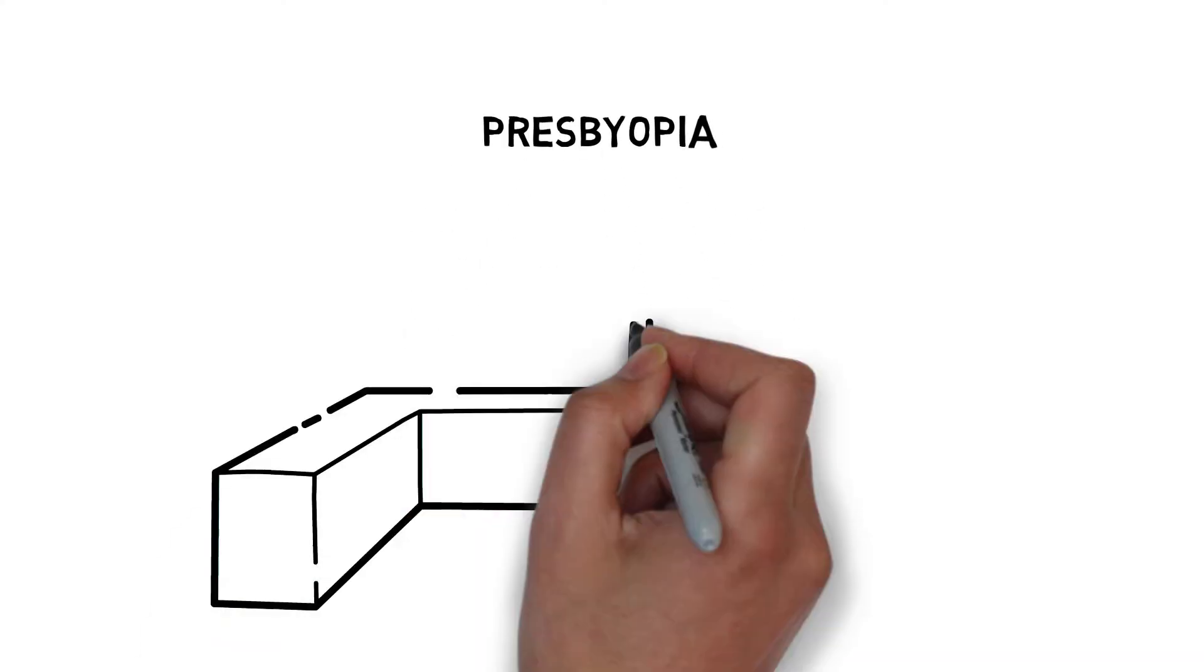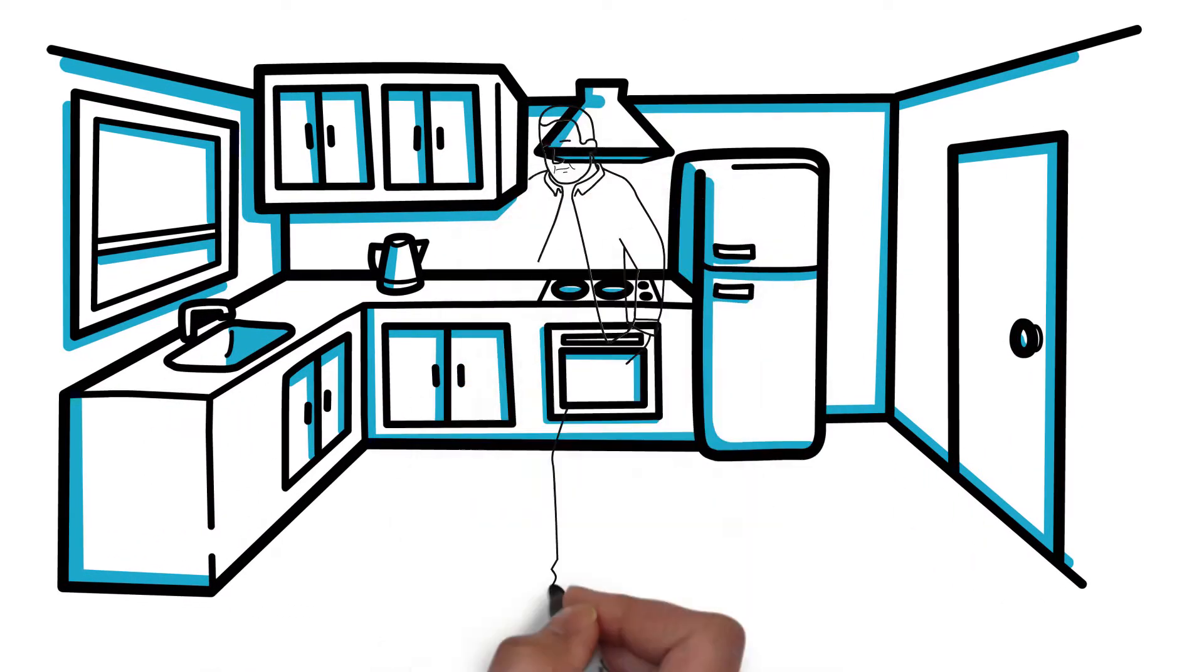Presbyopia occurs around the age of 40 and affects close to 1.7 billion people worldwide.